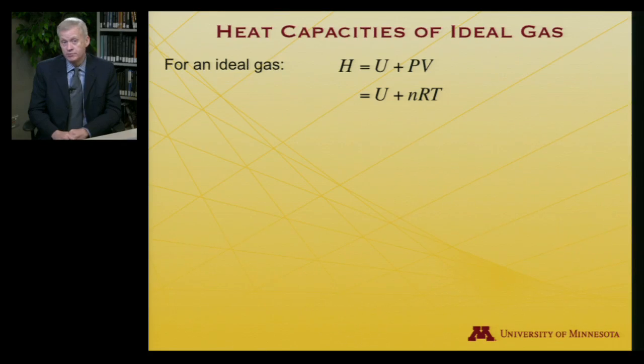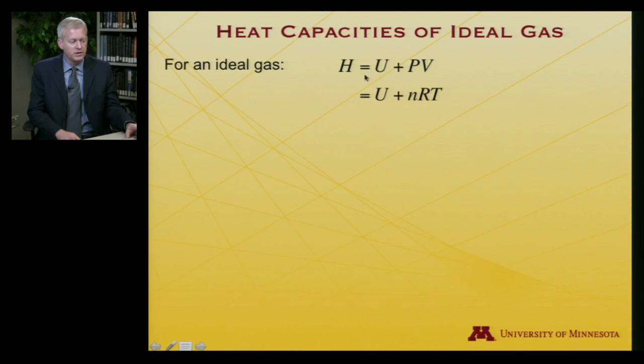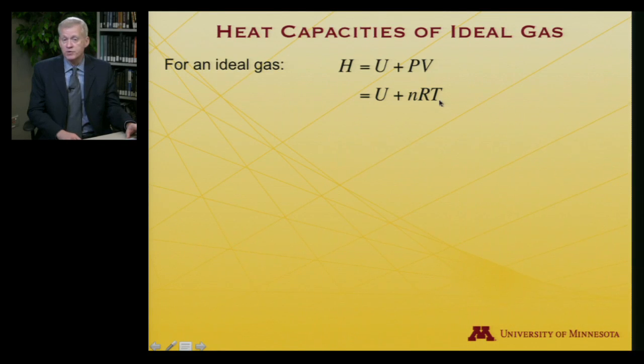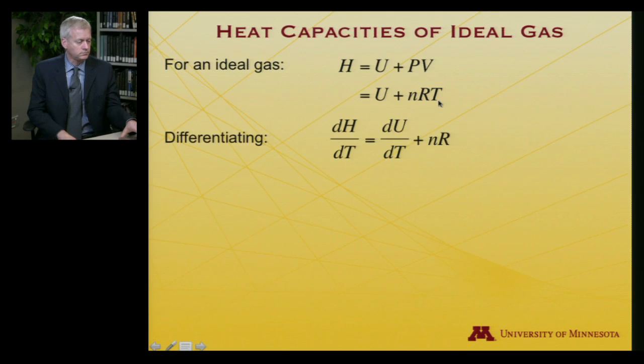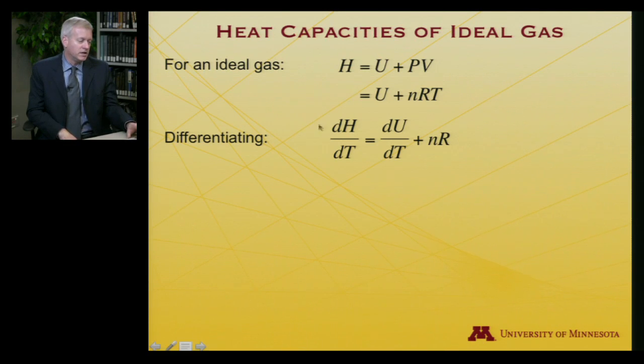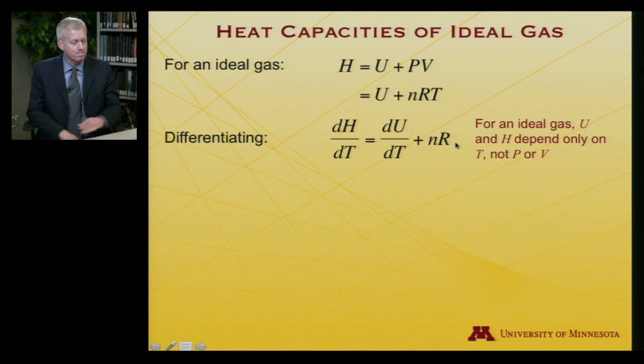The question was: which of the two heat capacities, constant volume or constant pressure, would be larger? Let me take a specific example using an ideal gas. Recall for an ideal gas, the definition of enthalpy is H = U + PV. For an ideal gas, PV = NRT. If I differentiate both sides with respect to temperature, I get dH/dT = dU/dT + NR.